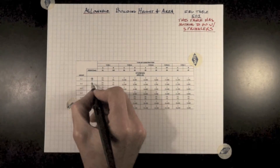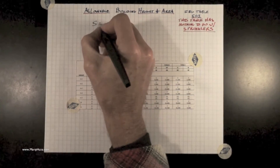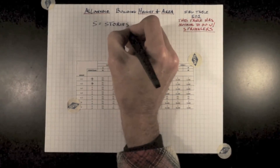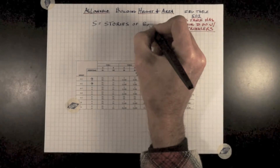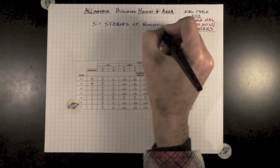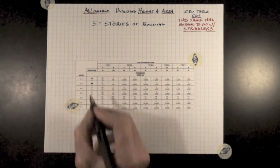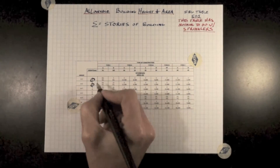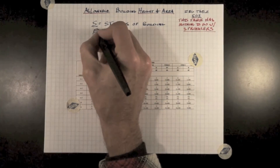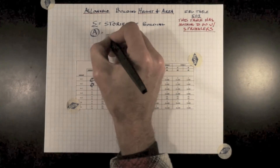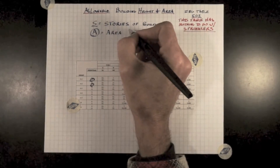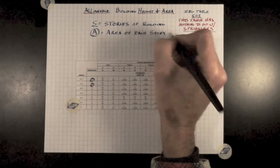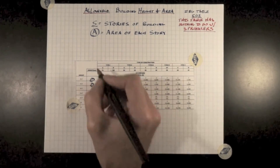This is only a section of the table. S stands for stories — the number of stories you may have depending on its construction type and its occupancy type, which is listed on the left. Now, area, which I've circled here, is the amount of area you're allowed to have per story.